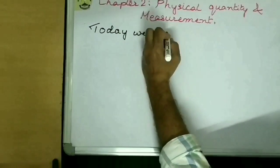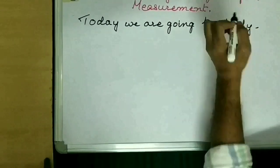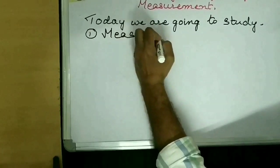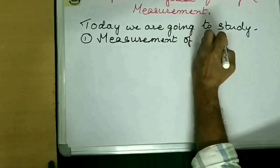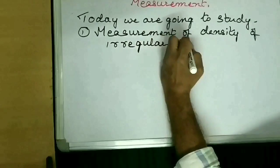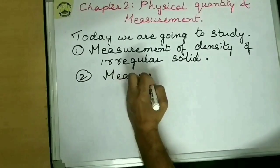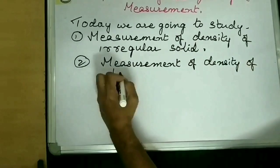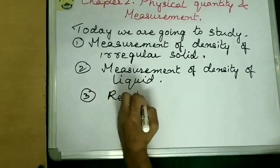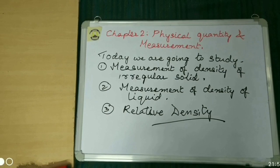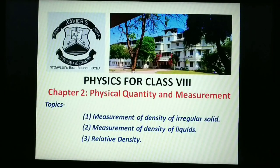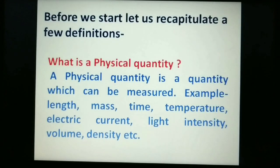The topics for today are: number one, measurement of density of irregular solid; number two, measurement of density of liquid; and number three, relative density. This is physics for class eight, chapter two: physical quantity and measurement.